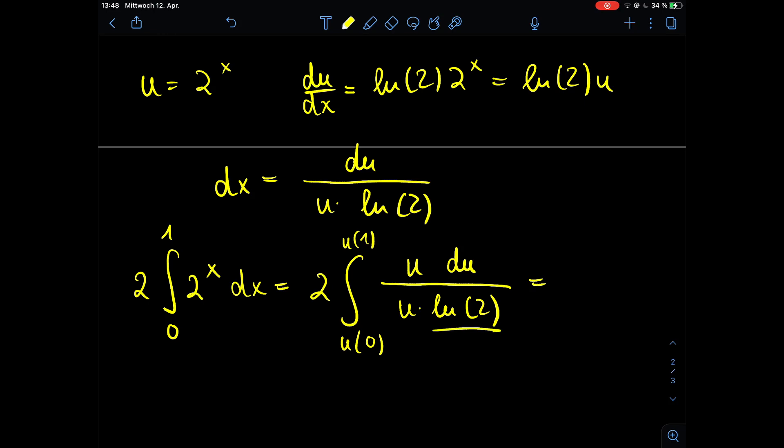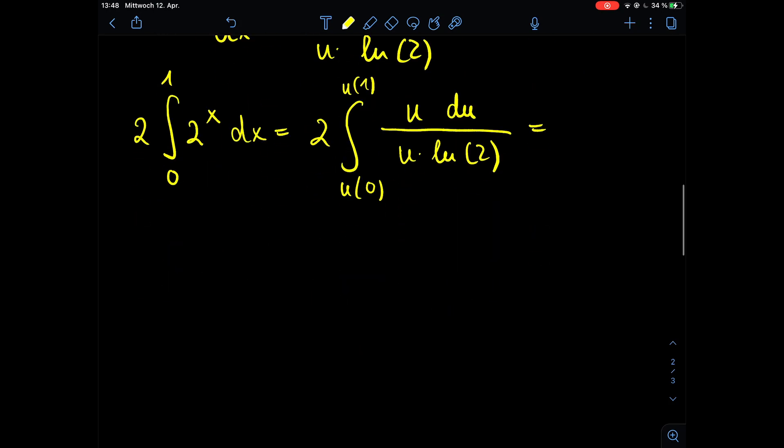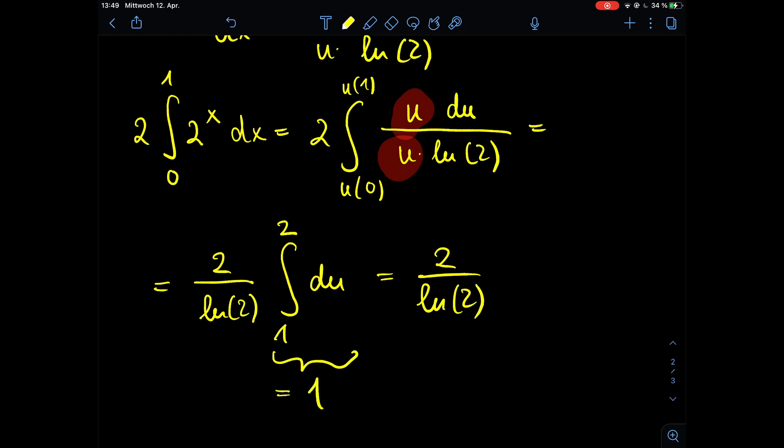So we can extract the natural log of 2 because this is just a constant. So we get 2 divided by the natural log of 2, and then we calculate the limits of the substituted integral. So we have u of 0 equals 1 and u of 1 equals 2. And since the u's here equal each other out, we only have the integral over du, so we get as a solution 2 divided by the natural log of 2 because the whole integral equals 1.